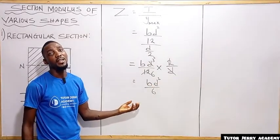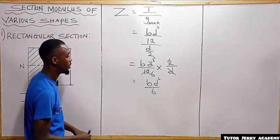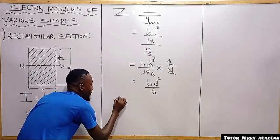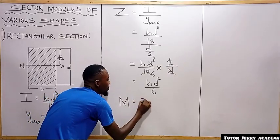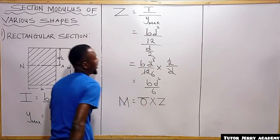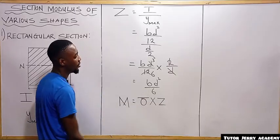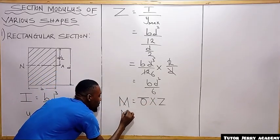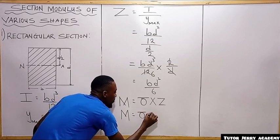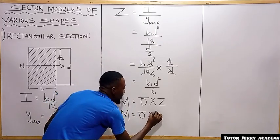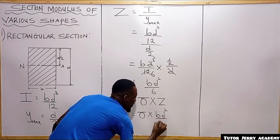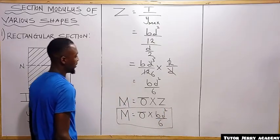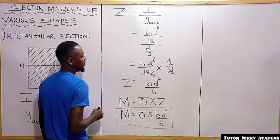From the flexure equation, we know that M = stress × Z, that is, our section modulus. Substituting our section modulus for a rectangular section, the maximum bending moment is M = σ × bd²/6. This formula gives the maximum bending moment for a rectangular section, and bd²/6 is the section modulus for a rectangular section.